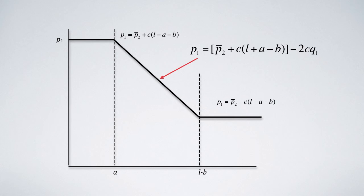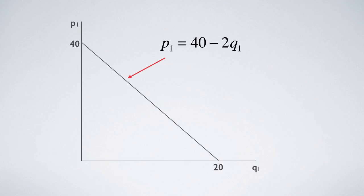From these two points, an equation for the line can be worked out. In our example, this equation is P1 equals 40 minus 2Q1.